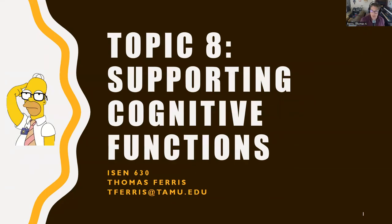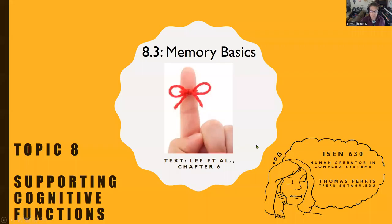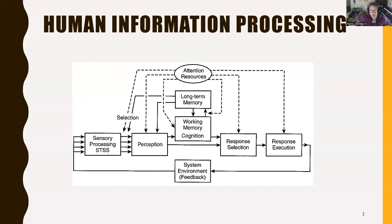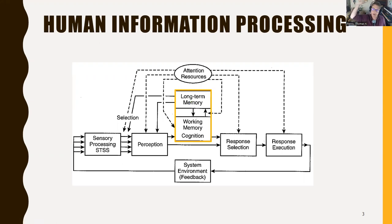Our next topic under topic eight, supporting cognitive functions, is memory — sections 8.1 and 8.2. We talked about attention; now this is where we start talking about what attention does and where our consciousness comes from. Going back to our information processing model, we have two general types of memory: working memory and long-term memory. We're also interested in the process by which information travels between the two.